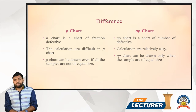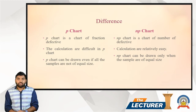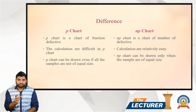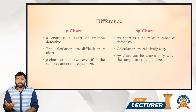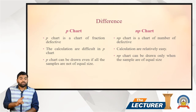In an exam, when a question asks you to draw a chart but does not specify which type, you must check whether the sample size is equal or not. If the sample sizes are not equal, draw a p-chart. If the sample sizes are equal, draw an np-chart. Similarly, if the question just says 'find the charts of attributes,' read carefully — if sample size is equal, use np-chart; if not equal, use p-chart.